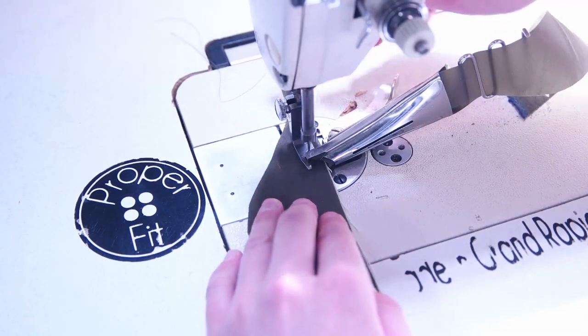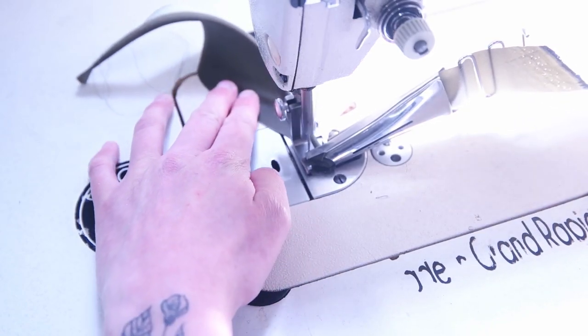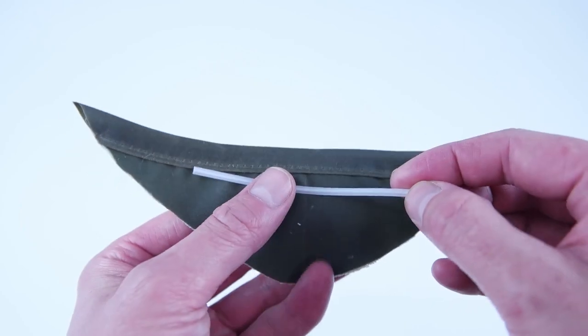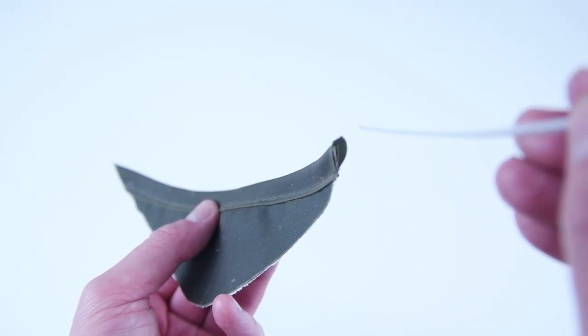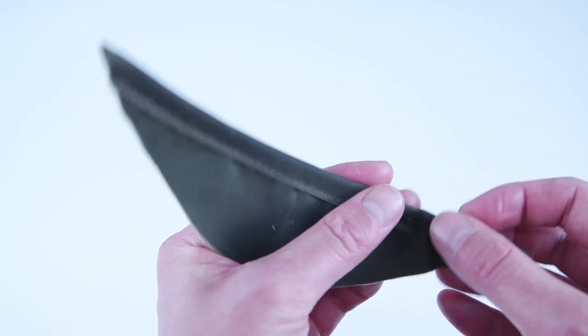And the third technique is to use a double fold bias tape binder attachment. This will fold it and sew it on at the same time. And once you have the bias tape sewn on, go ahead and grab your twist tie or any small bendy piece of metal and slide it into that bias tape. This is going to allow you to bend it around your nose for a secure comfortable fit.